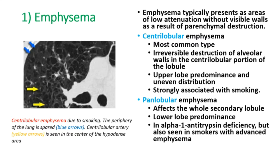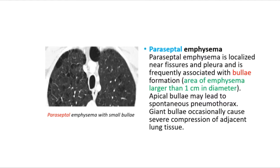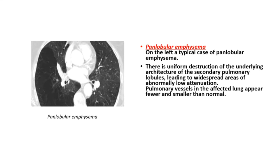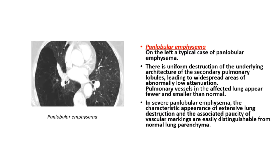Panlobular emphysema shows lower lobe predominance in alpha-1 antitrypsin deficiency, but is also seen in smokers with advanced emphysema. Paraseptal emphysema is localized near fissures and pleura, frequently associated with bulla formation; apical bullae may lead to spontaneous pneumothorax, and giant bullae can cause severe compression of adjacent lung tissue. In panlobular emphysema, there is uniform destruction of the secondary pulmonary lobule architecture, with widespread low attenuation and fewer, smaller pulmonary vessels.